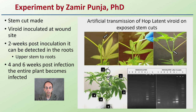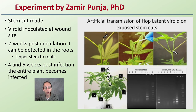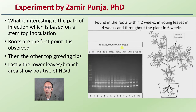In an experiment, a stem cut was made and an artificial transmission of hop latent viroid was applied to exposed stem cuts. The viroid was inoculated at the wound site. In two weeks post-inoculation, it could already be detected in the roots as well as upper stem portions of the plant. Four to six weeks post-infection, the entire plant becomes infected. It doesn't just radiate out from one point — it jumps to specific portions: roots in two weeks, young growth tips in four weeks, and the rest of the plant in six weeks.